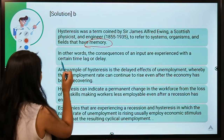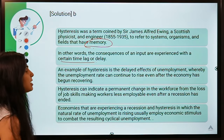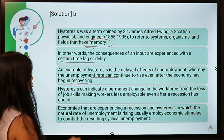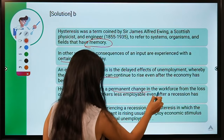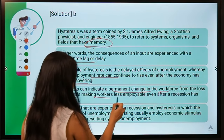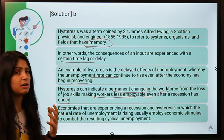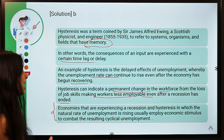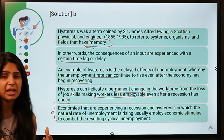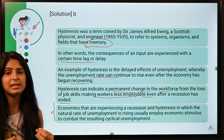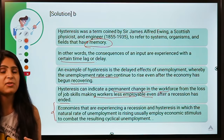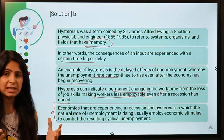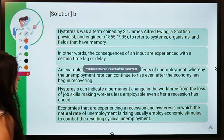Hysteresis — a term coined by Sir James Alfred Ewing, a Scottish physicist — refers to systems and organisms that have memory of past events and therefore don't perform as they previously did. For example, unemployment can continue rising even after economic recovery has begun, indicating a permanent change in workforce behavior. Governments can combat this by providing fiscal stimulus and establishing trust so people spend with confidence.